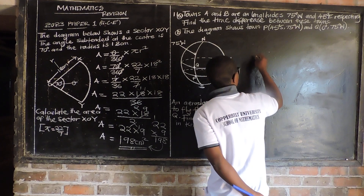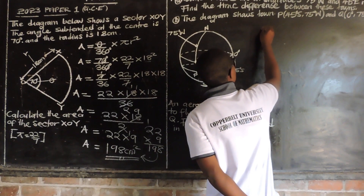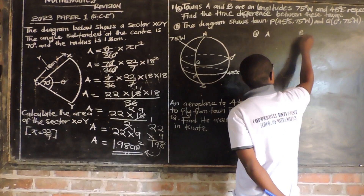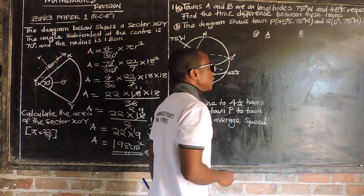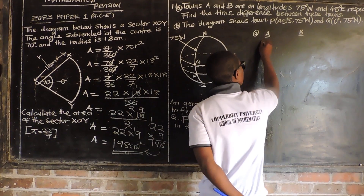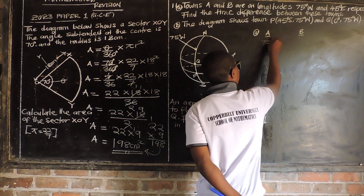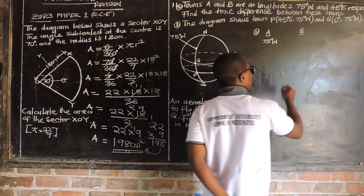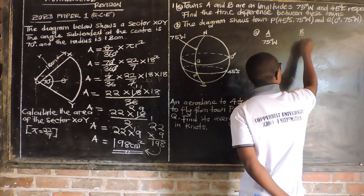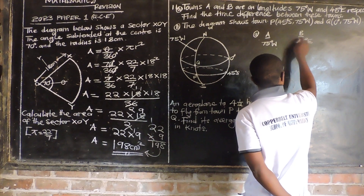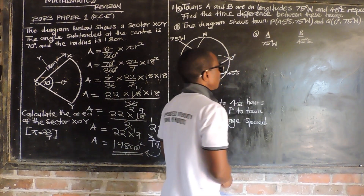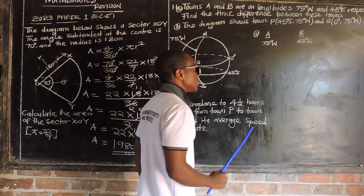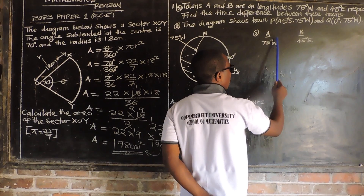We have town A and town B. Town A is on longitude 75 degrees west. Then town B is on longitude 45 degrees east. So these are the two towns.